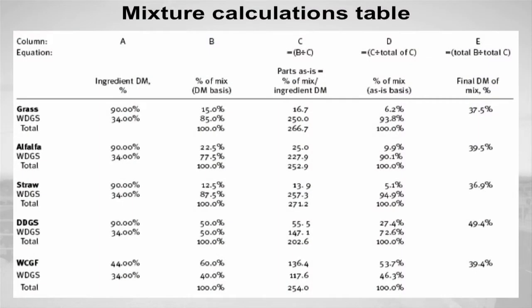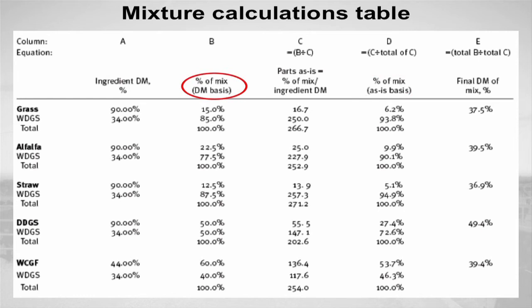The following table provides the minimum mixtures required for grass hay, alfalfa hay, and wheat straw when combined with wet distillers grains plus solubles. It provides example calculations for converting from a mixture of two feeds on a dry matter basis to an as-is basis and can be used for any combination of feedstuffs. The percentages on an as-is basis are required for actually weighing the feeds into your mixer. The percentages on a dry matter basis were the minimal amounts required of these different feeds to store in bags under pressure.